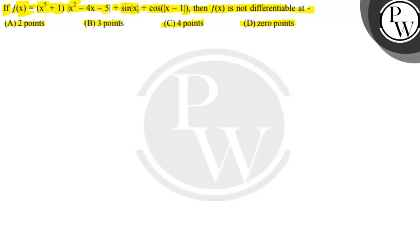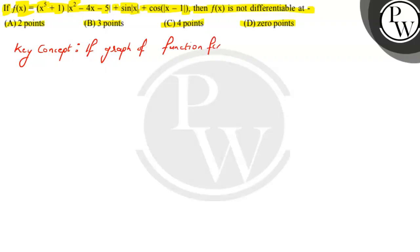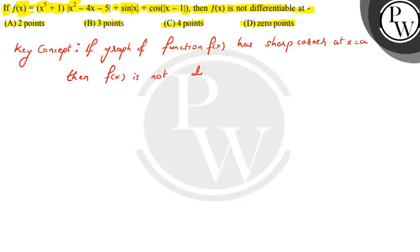Let's start with the solution. Let's note down the key concept for this problem. The key concept is: if the graph of a function f(x) has a sharp corner — say a sharp corner at x equals a — then f(x) is not differentiable at x equals a.